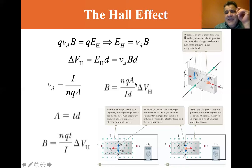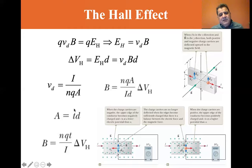Now the area is equal to t times d, where t is this thickness. So if we make that substitution, td for the area, we see that the d's cancel and B is equal to the number of charge carriers times the charge times t the thickness divided by the current times delta V_H.